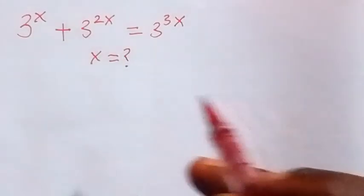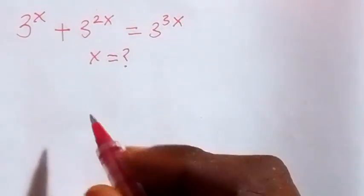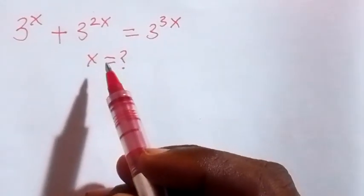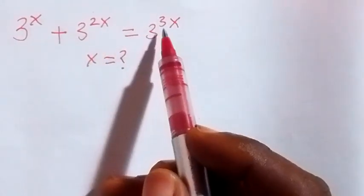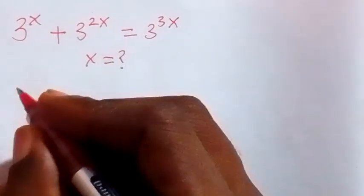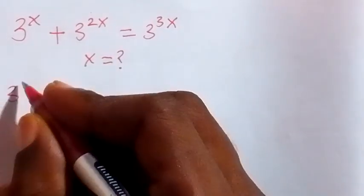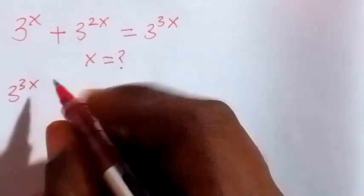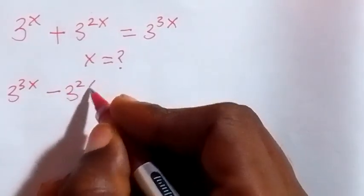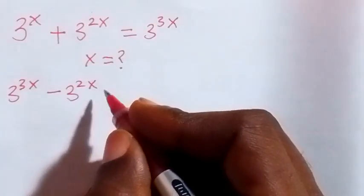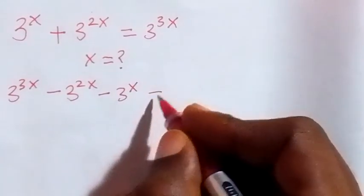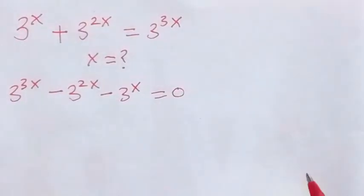Hello, you are welcome. How to solve this problem — finding the value of x. Let's rearrange and take from the power here. Let's take everything to this side, then this will be 3 raised to power 3x, minus 3 raised to power 2x, minus 3 raised to power x, equals to 0.